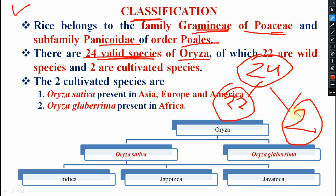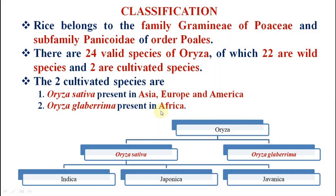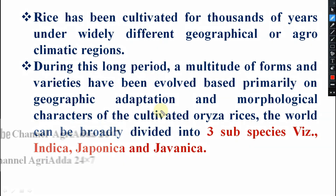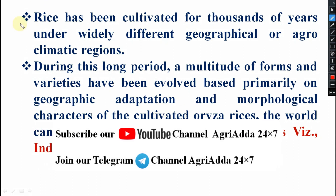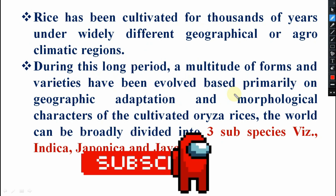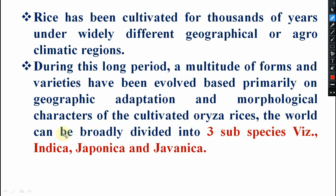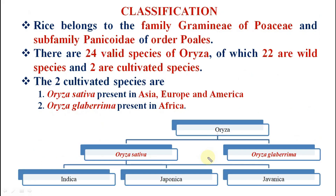The two cultivated species are: one is Oryza sativa and another one is Oryza glaberrima. Sativa is grown in Asia, Europe, America - Japan, Indonesia and these regions. Glaberrima is grown in Africa. The world can be broadly divided into three subspecies: indica, japonica, and javanica.